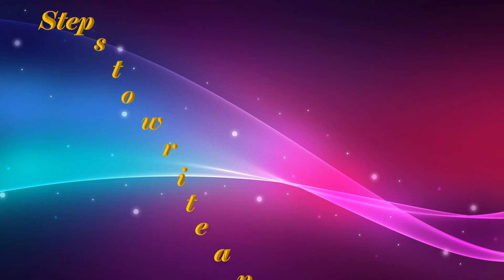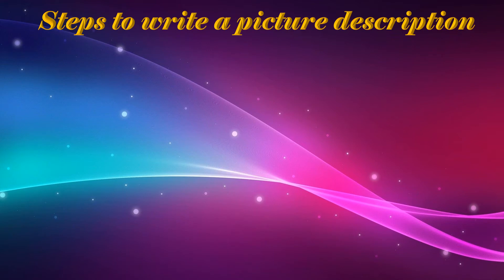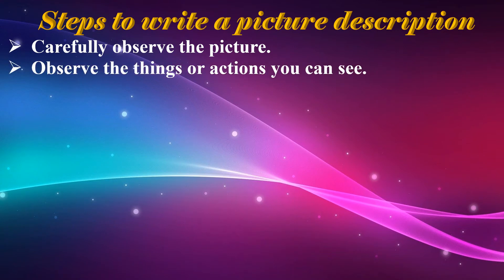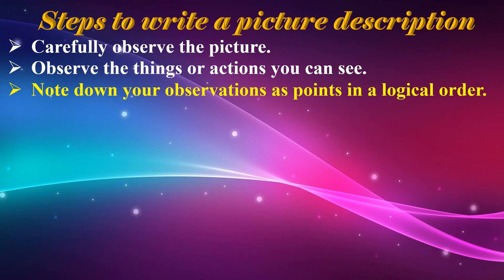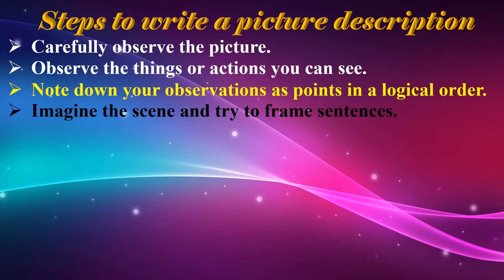Let's talk about the important steps to be taken while writing a picture description. Number one, carefully observe the picture. Number two, observe the things or actions you can see. Number three, note down your observations as points in a logical order. Number four, imagine the scene and try to frame sentences.